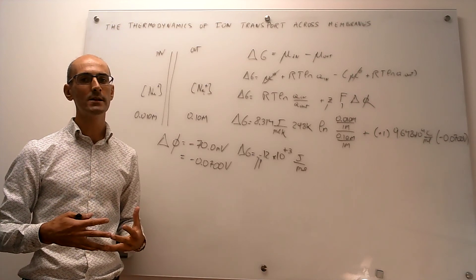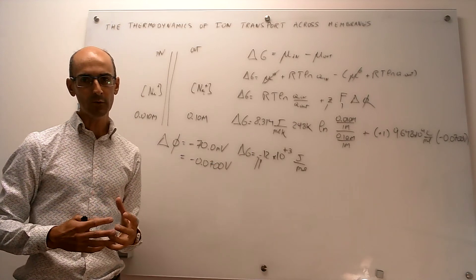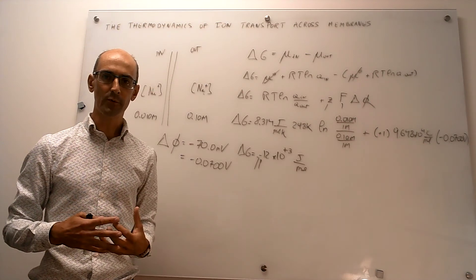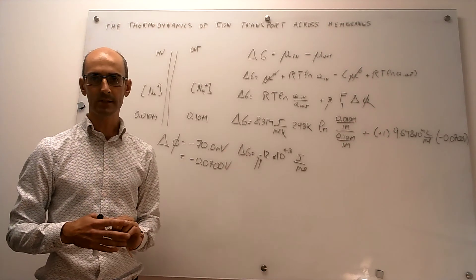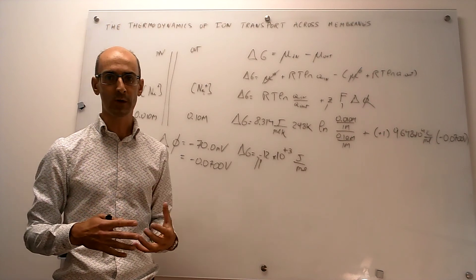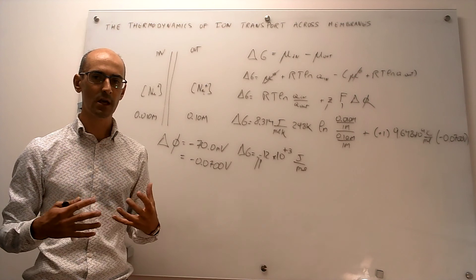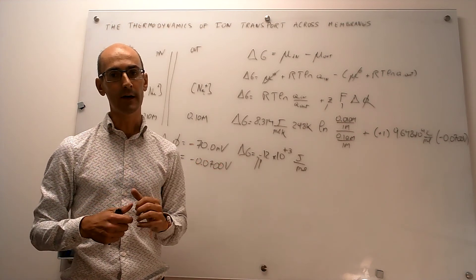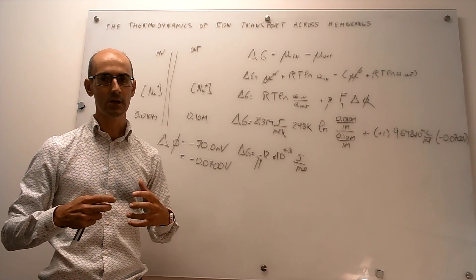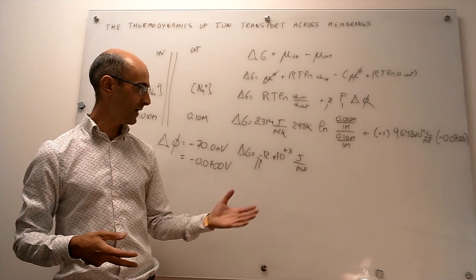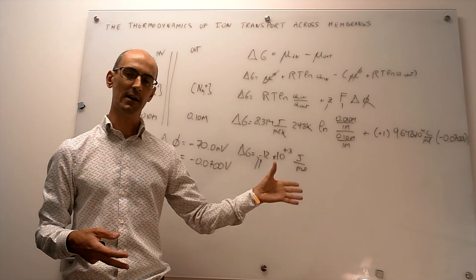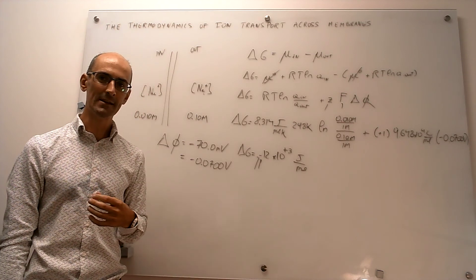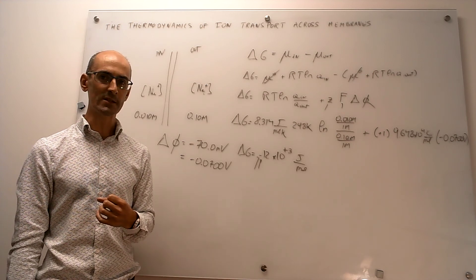If delta G had been positive, the transfer would not be spontaneous, but you could still drive it by coupling an exergonic process that provides Gibbs energy — the ability to do work. That's how active transport across membranes works: you transport ions with a positive delta G, and to overcome that limitation you couple the transfer to, say, hydrolysis of ATP. This makes the overall delta G of transport plus ATP hydrolysis negative, meaning it should be spontaneous overall. In this video we have seen the ins and outs of the thermodynamics of ion transport across membranes.